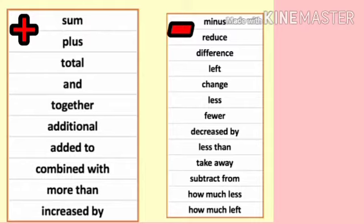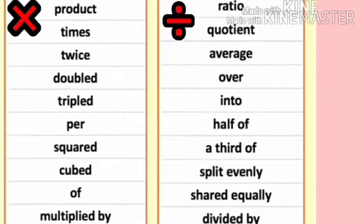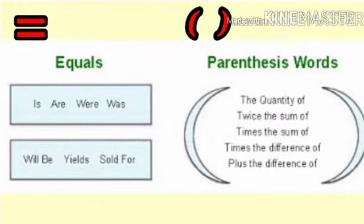The skill of translating a verbal statement to an algebraic equation requires understanding the words commonly used to represent mathematical operations. Words like 'add some,' 'plus,' 'total,' 'together,' 'additional,' 'added to,' 'combined with,' 'more than,' and 'increased by' are commonly used to represent addition. Similarly, there are many other words to represent subtraction, multiplication, division, and the equal-to sign. The words 'is,' 'was,' 'will be,' 'is equal to,' and 'gives' represent the equal-to sign.